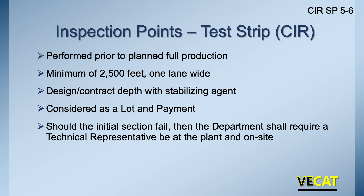For cold in place, the trial section is also done before full production but covers a greater distance — 2,500 feet, about a half mile. We check that the depth called for in the contract is being achieved and that stabilizing agents, whether foam asphalt or emulsified asphalt, are being injected properly. Just like cold plant recycle, it's considered a lot for density and payment. If there's a problem, VDOT can require a technical rep before proceeding to another trial section.